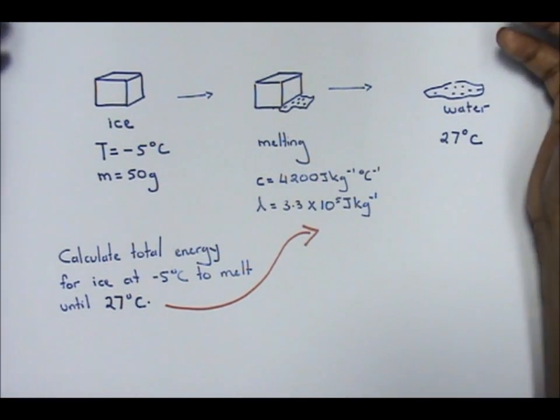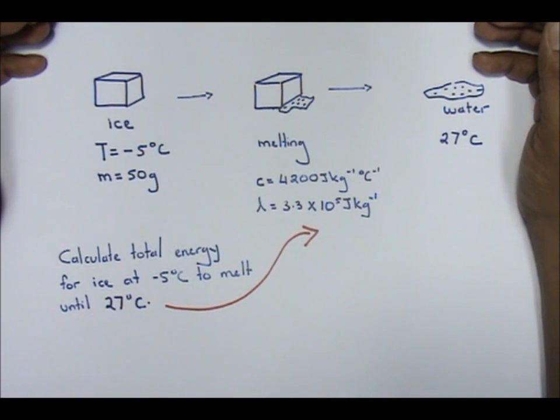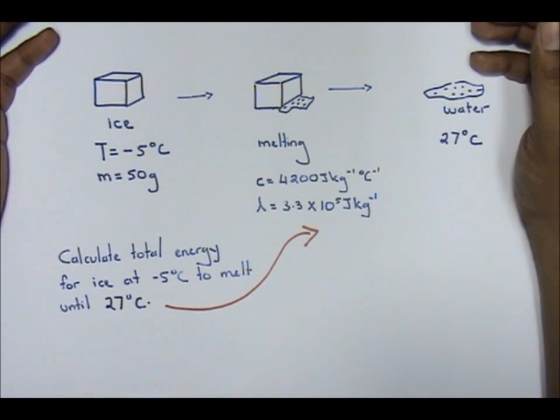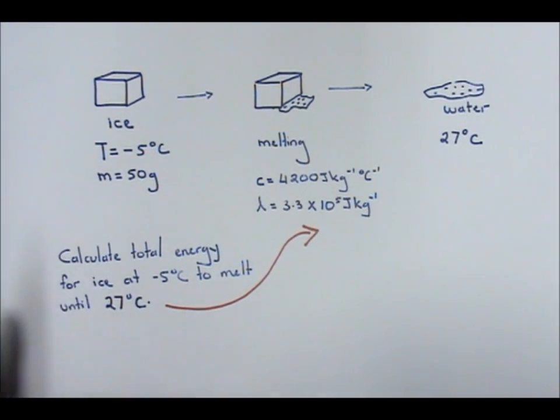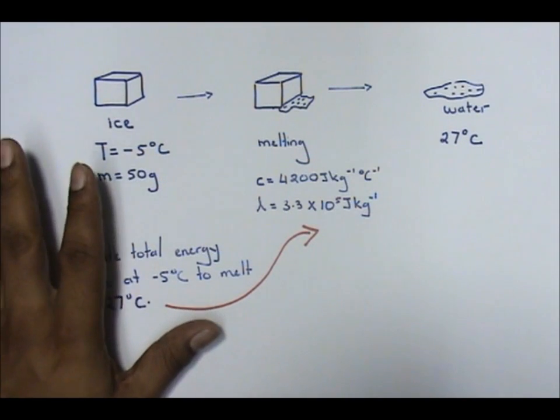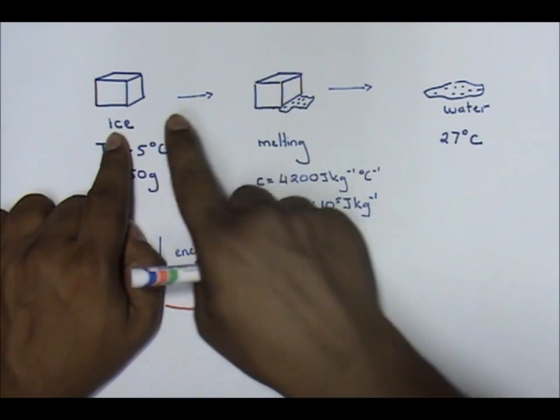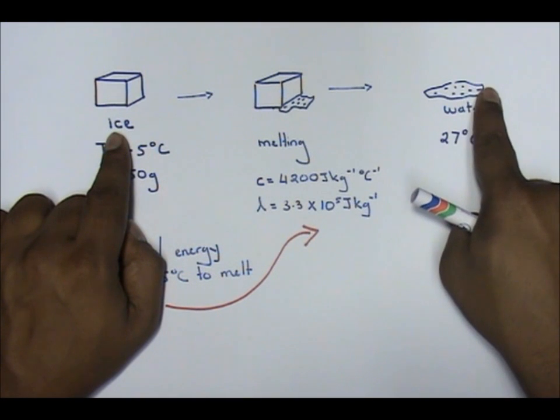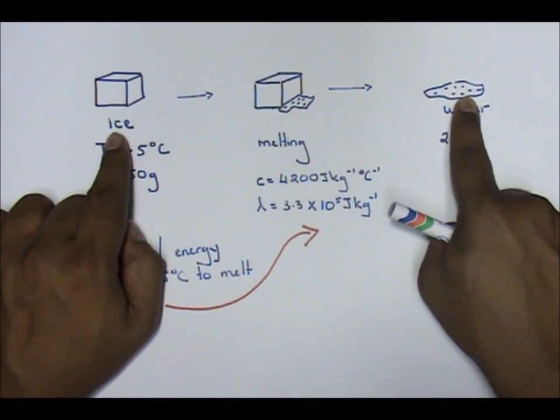Okay guys, this question that you have in front of you is a combination of latent heat and heat capacity. Now, look at the information that is given to you. Ice will melt, and after that at room temperature it will turn into water.